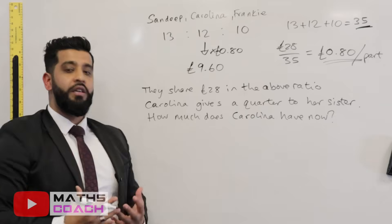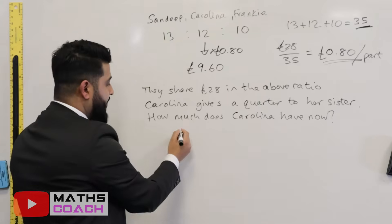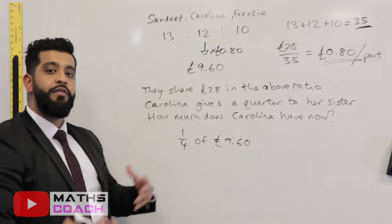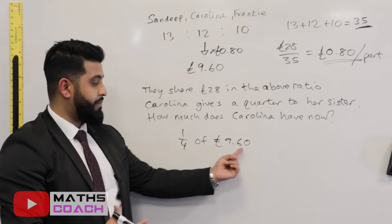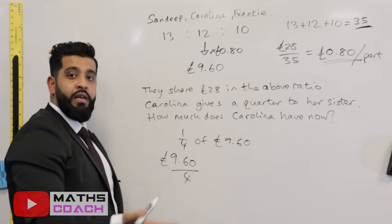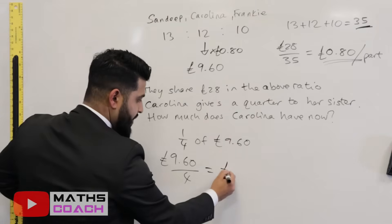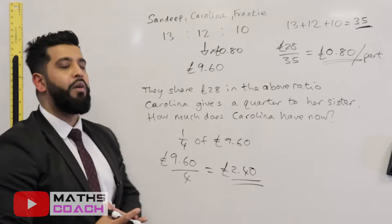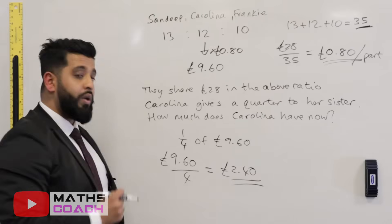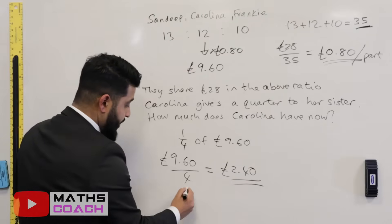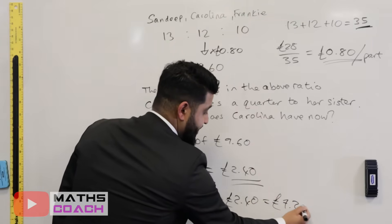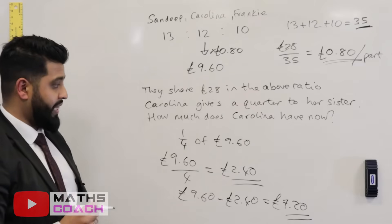Carolina gives a quarter of her nine pounds sixty to her sister. To find one quarter, we divide 9.60 by 4, because a quarter means four parts of a whole — that gives two pounds forty. So to find what she has remaining: nine pounds sixty minus two pounds forty leaves Carolina with seven pounds twenty.